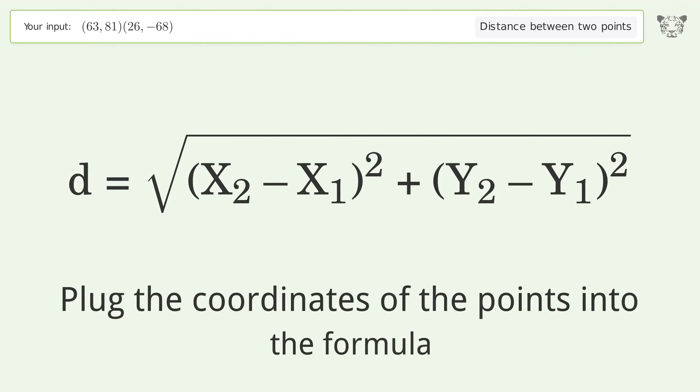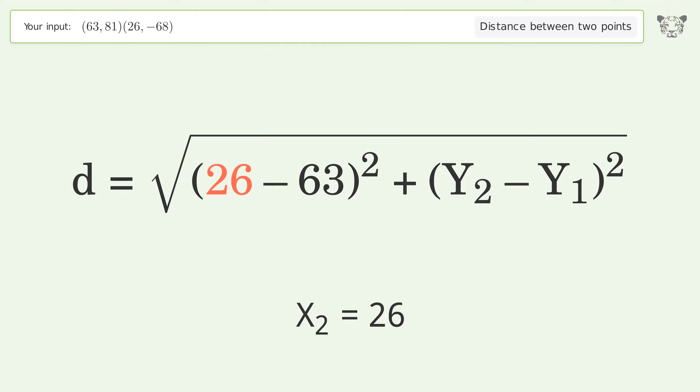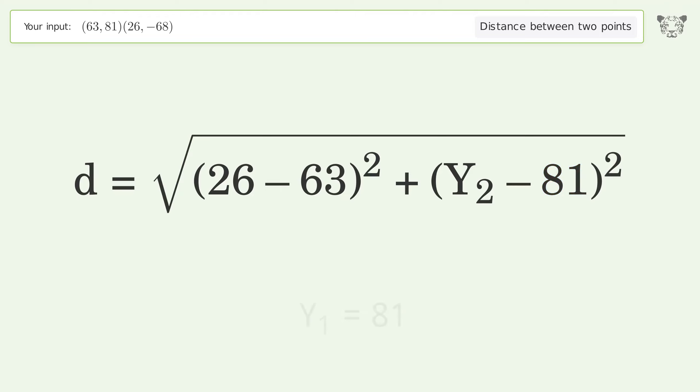Plug the coordinates of the points into the formula. X1 equals 63, X2 equals 26, Y1 equals 81, Y2 equals negative 68.